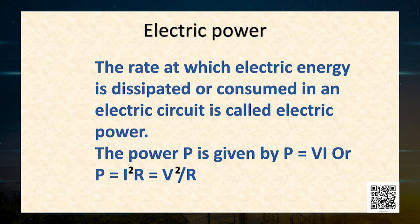You must be wondering how we have got these formulas. Remember Ohm's law: V equals IR. Using Ohm's law in the VIP formula, we get two new formulas for power: I squared R and V squared upon R. The SI unit of electric power is the watt — it is the power consumed by a device that carries one ampere of current when operated at a potential difference of one volt. Thus, one watt equals one volt into one ampere.